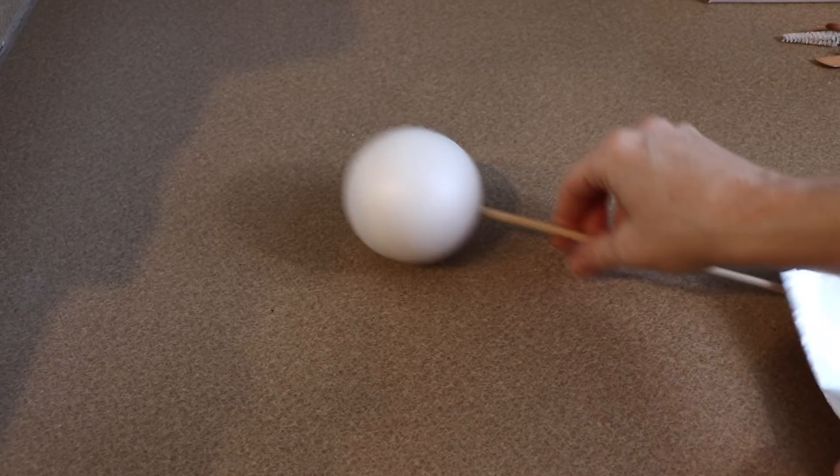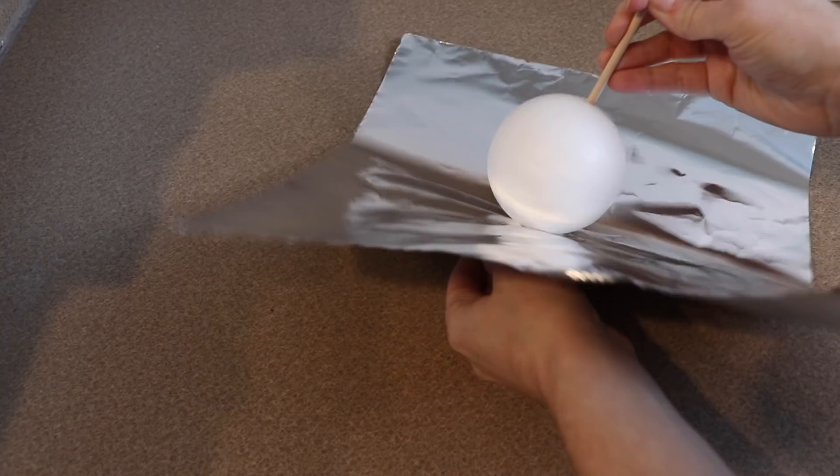The first thing we're gonna work on for our porg is the face. This is going to be made out of clay, but it's going to have a foam base. So I have a little foam ball. I'm gonna put it on a wooden dowel, that way it's easier to handle, and I'm gonna cover it in tin foil.